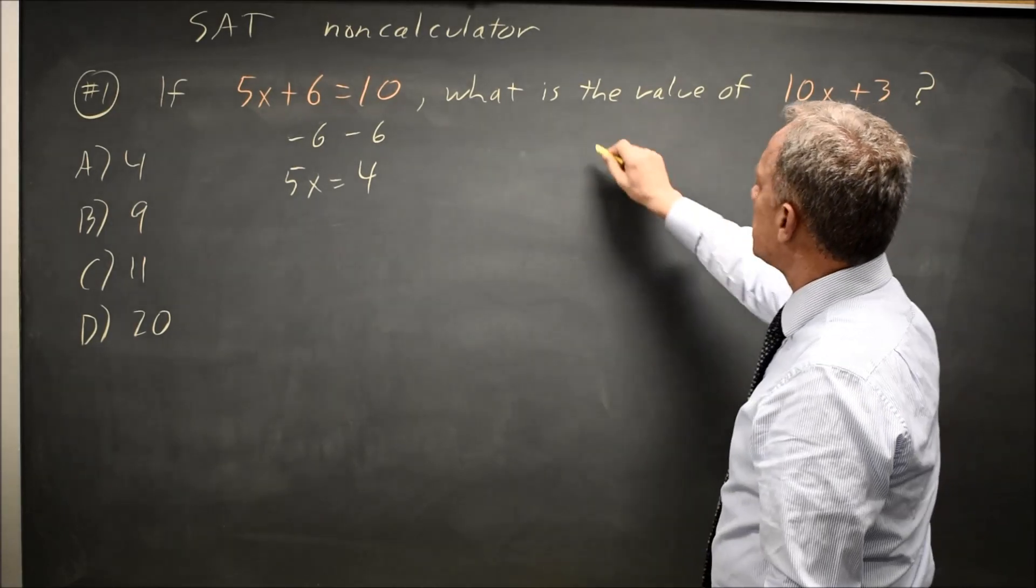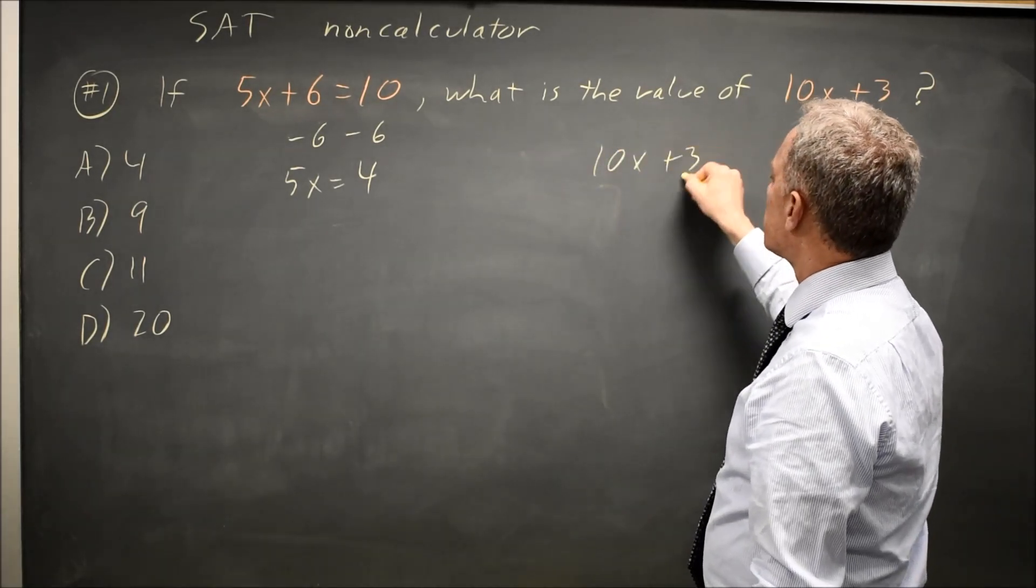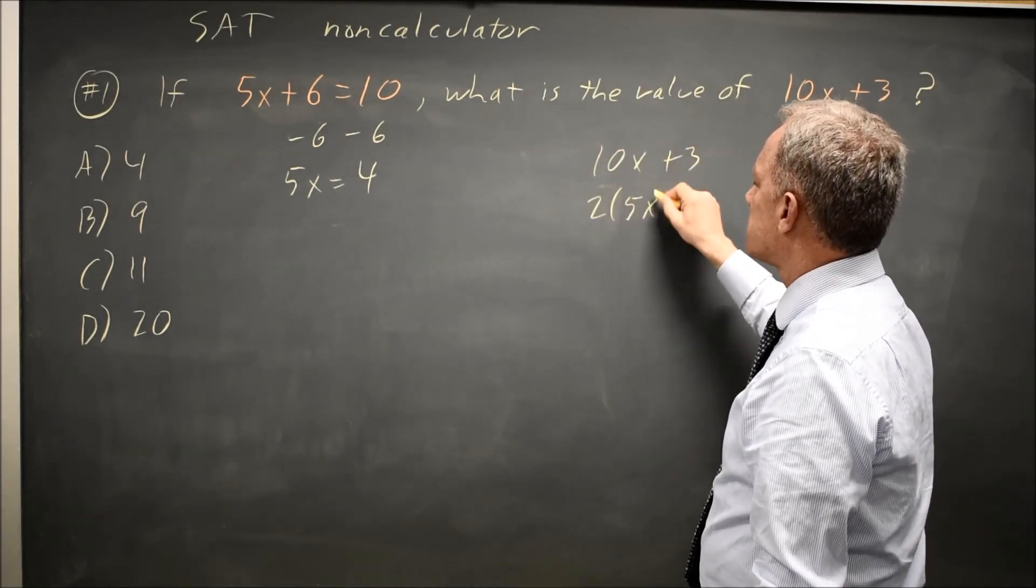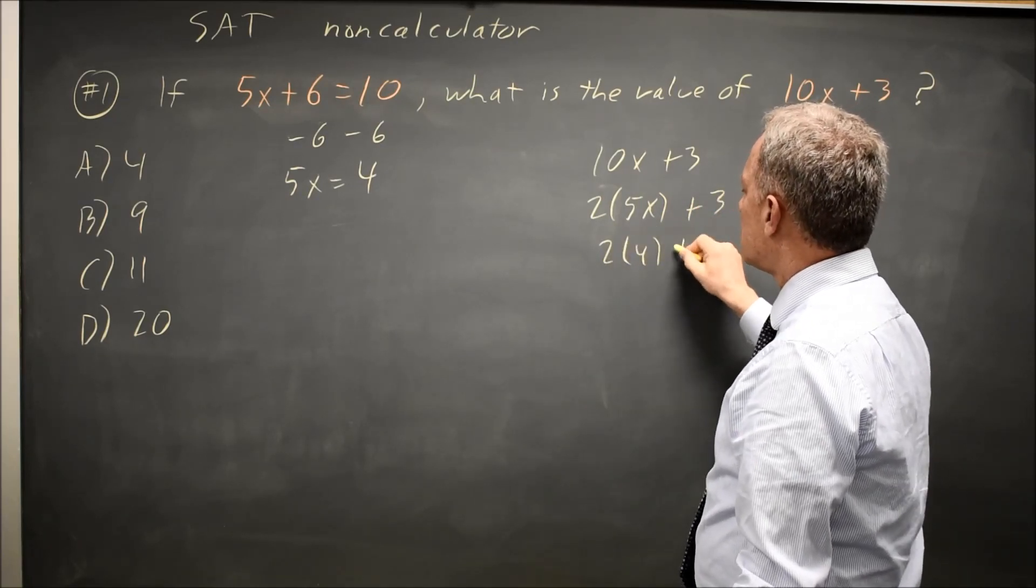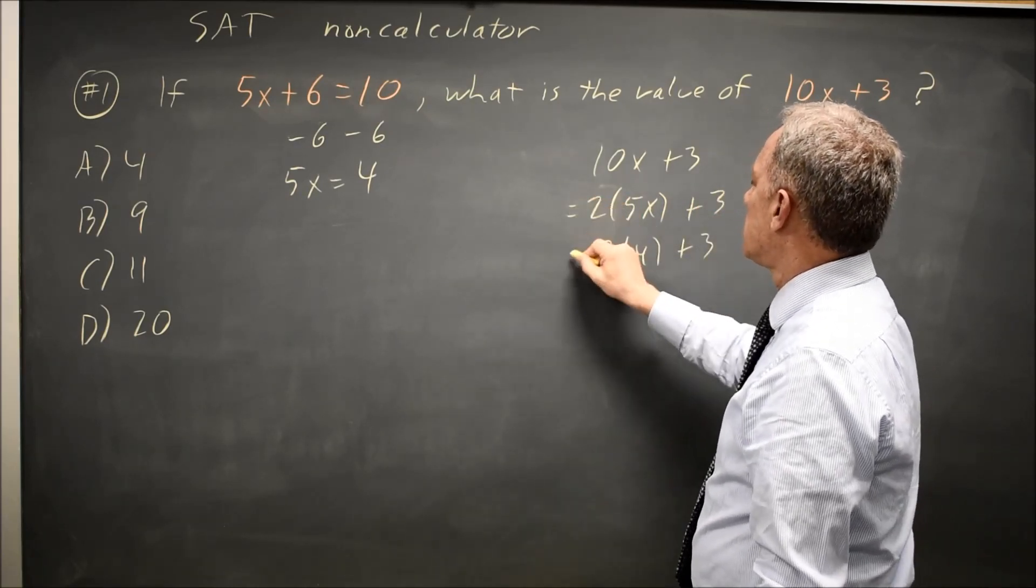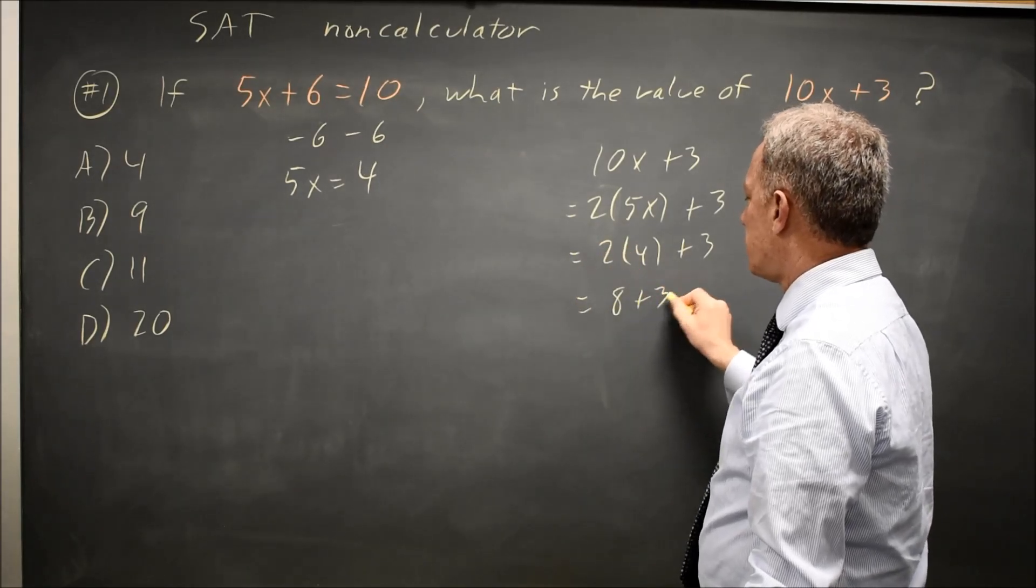Or I can say, oh, 10x plus 3, that's twice 5x, and then add 3 to that, so that's twice 4 plus 3 is 8 plus 3, which is 11.